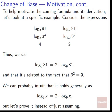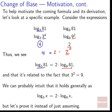To help motivate the coming formula, let's look at a specific example. Consider log base 3 of 81 and log base 9 of 81. Log base 3 of 81: we can rewrite 81 as 3 to the 4th, so that's 4. Log base 9 of 81: we can rewrite 81 as 9 squared, so that comes out as 2. We see that log base 3 of 81 equals 2 times log base 9 of 81, because 4 equals 2 times 2. This is related to the fact that 3 squared equals 9.